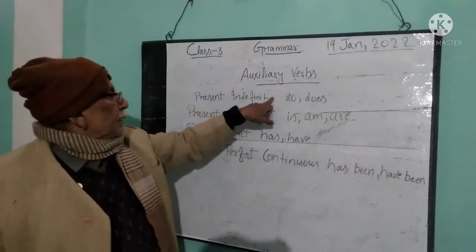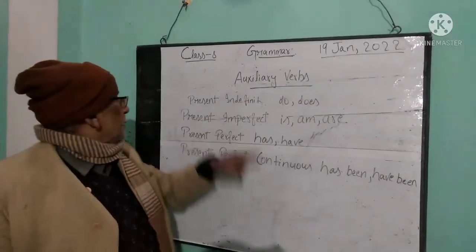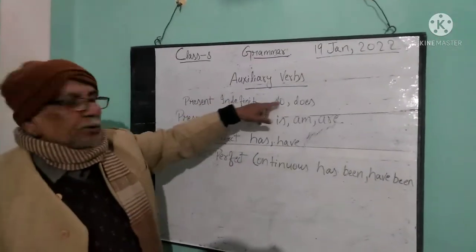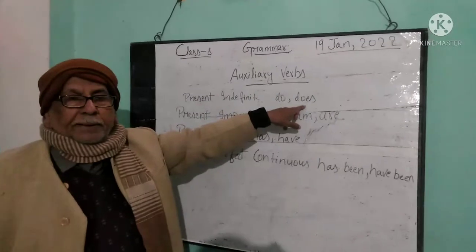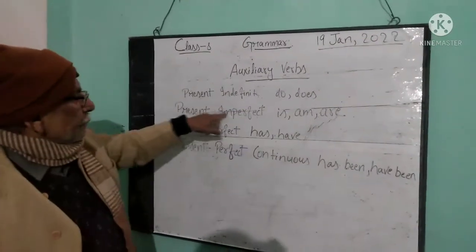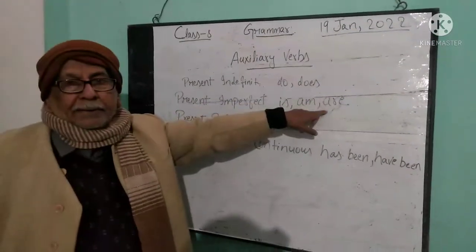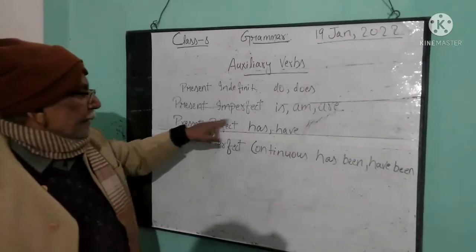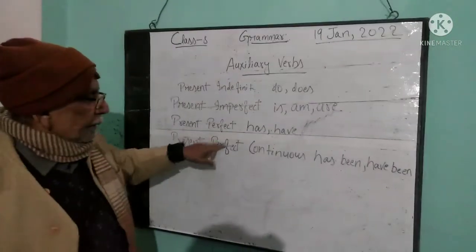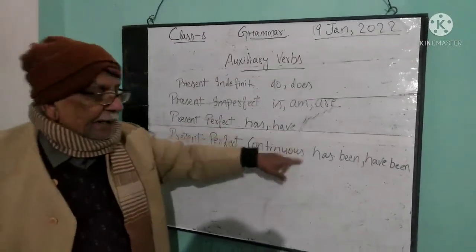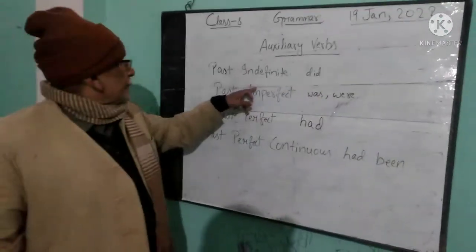Now see the tenses. Present indefinite — just remember it. Present imperfect uses 'is/am/are.' Present perfect uses 'has/have.' Present perfect continuous uses 'has been/have been.'